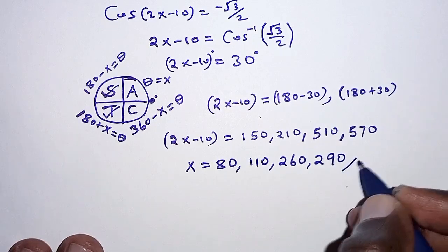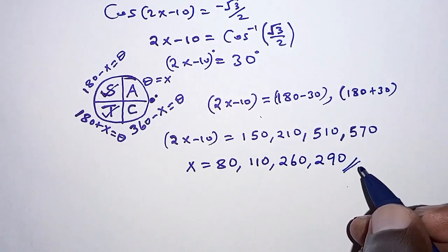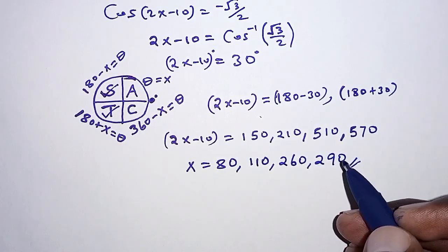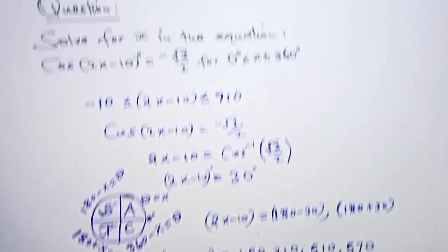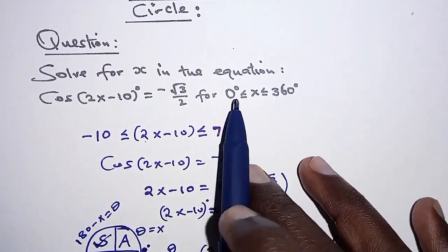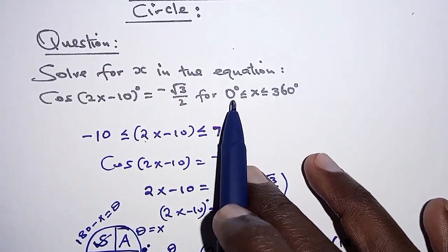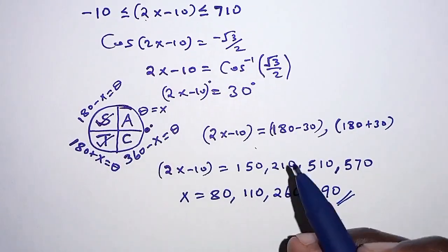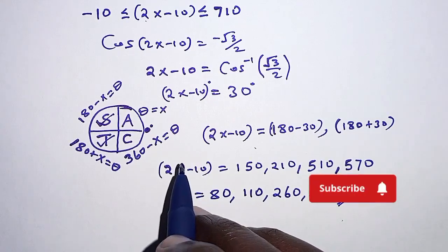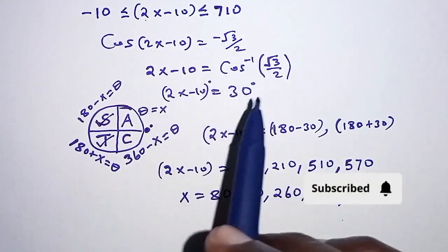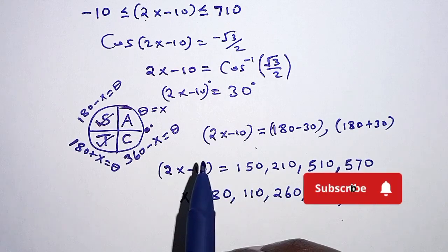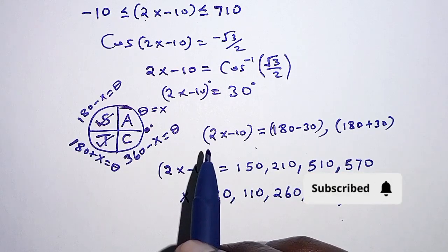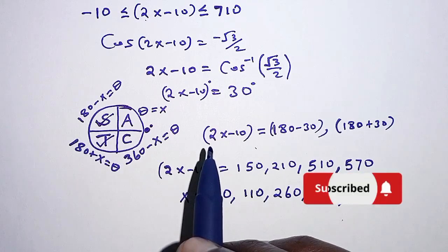So these are the values of x, the values of x as required in the equation. Remember, we want to maintain the values of x in the range 0 up to 360. So that is the step-by-step procedure for solving such problems. I want to thank you for staying with me till this end. Thank you for watching. See you in the next video.